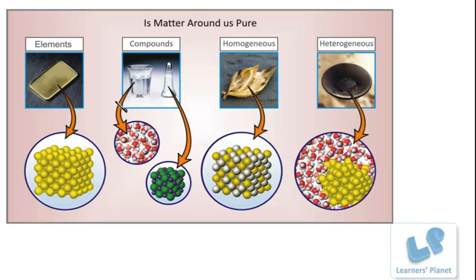In a mixture, the components or constituents do not react with each other or combine chemically. So they retain their own properties. In mixtures, you can identify the constituents — there is a set barrier between the constituents in case of heterogeneous mixtures. So we can separate the constituents of mixtures, both homogeneous and heterogeneous, by physical methods of separation. We will be discussing these methods and their applications in day-to-day life.